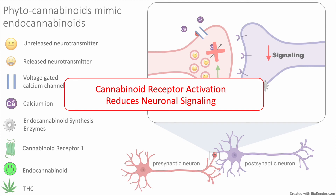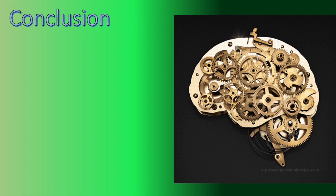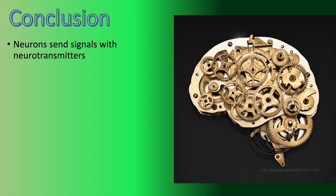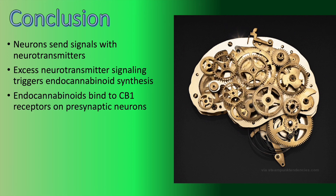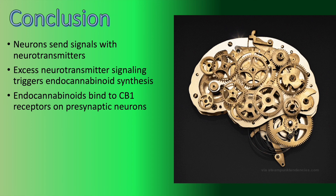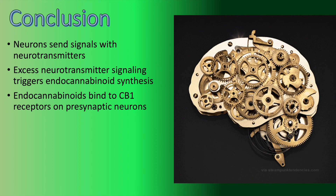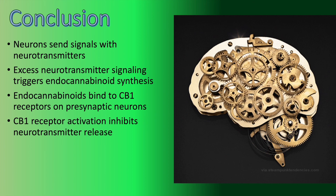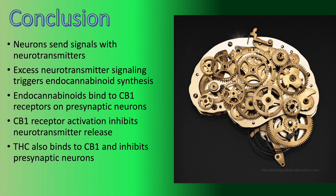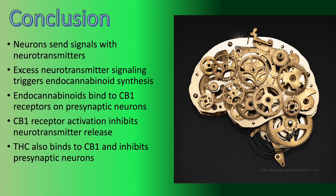In follow-up videos, I will describe how this mechanism of reduced neuronal signaling leads to some of marijuana's effects, such as those on stress and pain. In conclusion, neurons send signals with neurotransmitters. Excessive neurotransmitter signaling triggers endocannabinoid synthesis. Endocannabinoids bind to CB1 receptors on presynaptic neurons, and CB1 receptor activation inhibits neurotransmitter release. THC also binds to CB1 receptors and will also inhibit neurotransmitter release.